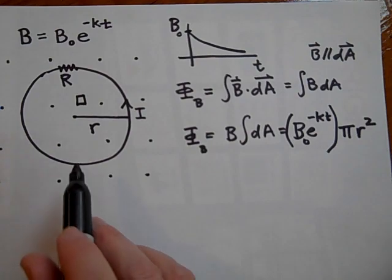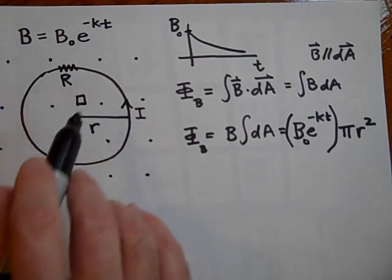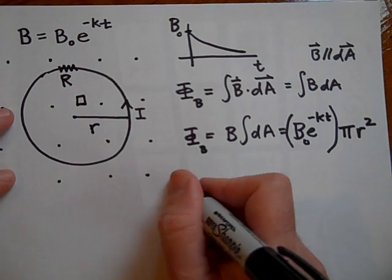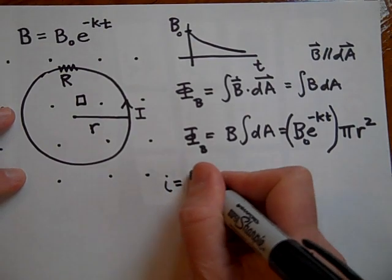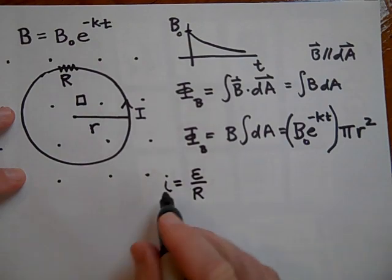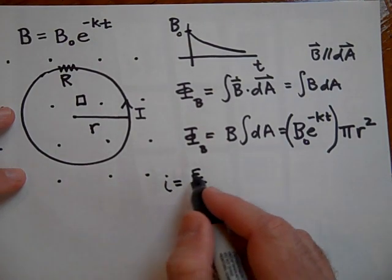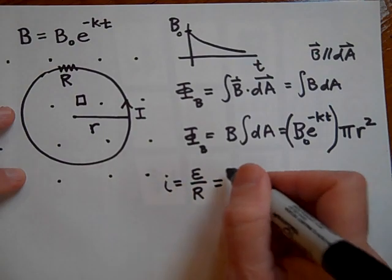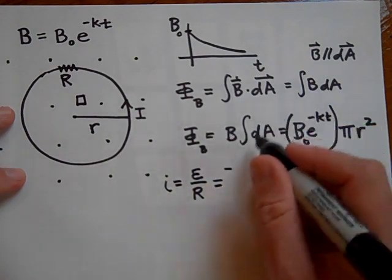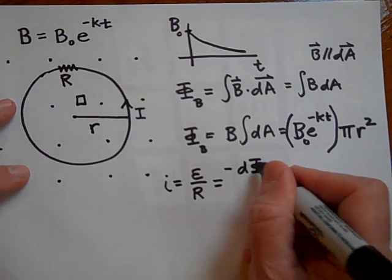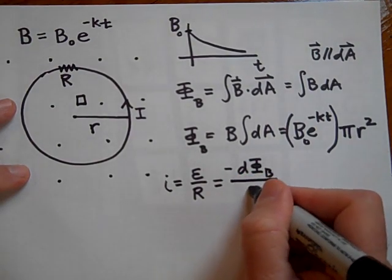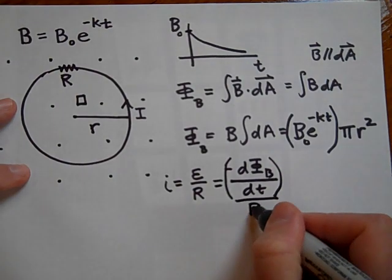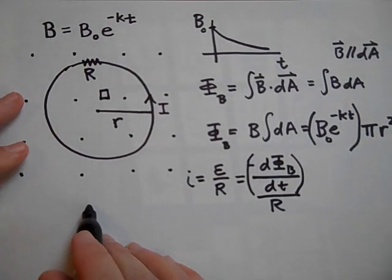Could you tell me what the current will be in here? What will be the current that will be induced in here? The current that will be induced in there, the I, will equal the E over R. That's Ohm's law. Voltage equals I times R. So I equals the EMF induced over R. And so the EMF induced is going to be the negative derivative of the flux with respect to time. So it's the negative derivative of the flux, the magnetic flux with respect to time. That will be the EMF induced. And then we'll divide that by R.